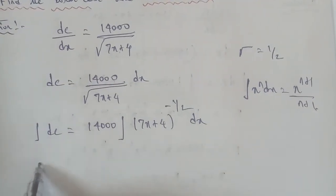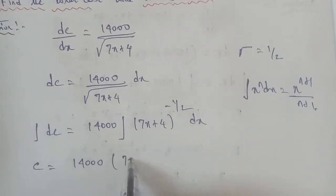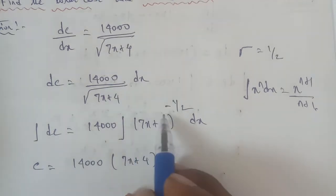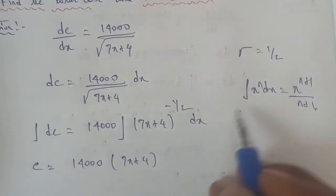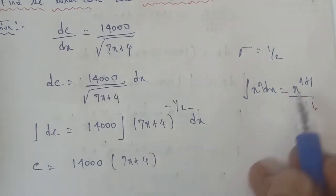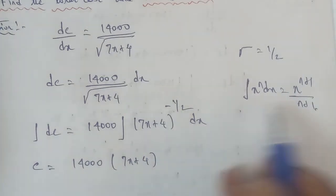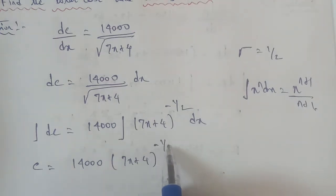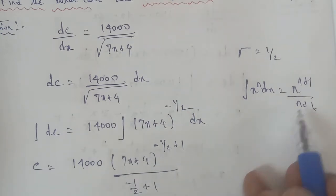Applying the formula to the integration of DC: the function is 14,000 times (7x plus 4) to the power of minus 1 by 2. The n value is minus 1 by 2. So we apply minus 1 by 2 plus 1 in the numerator, and divide by minus 1 by 2 plus 1 in the denominator. The result gives us the whole power of n plus 1.